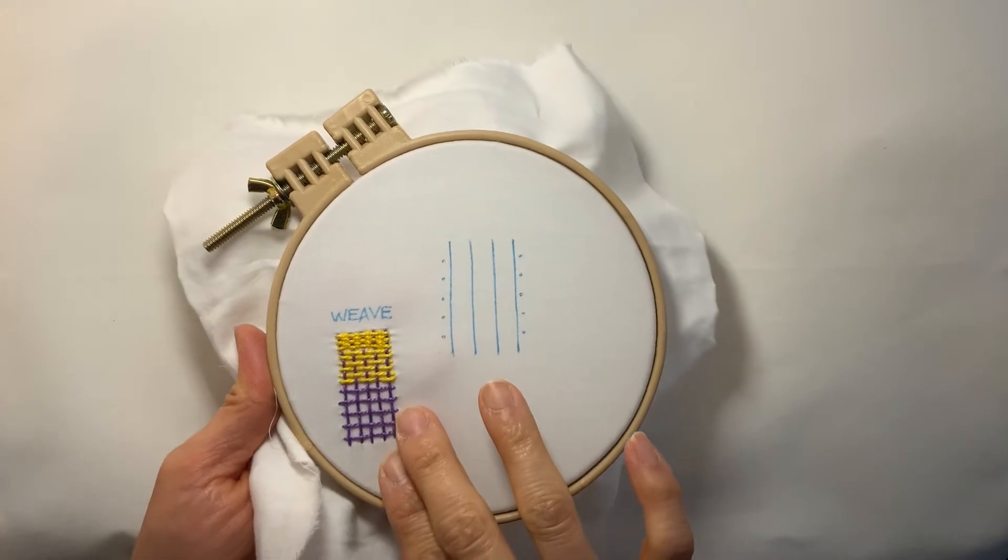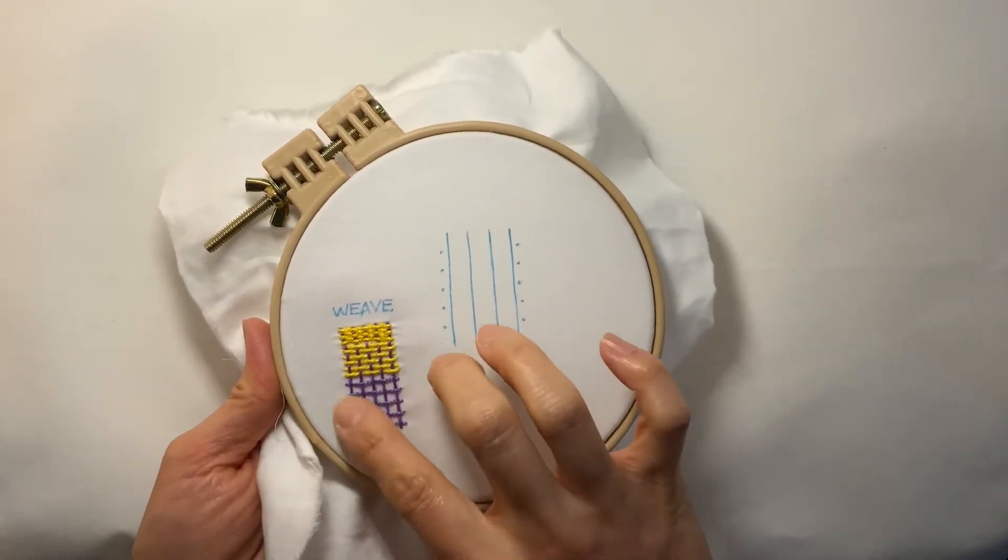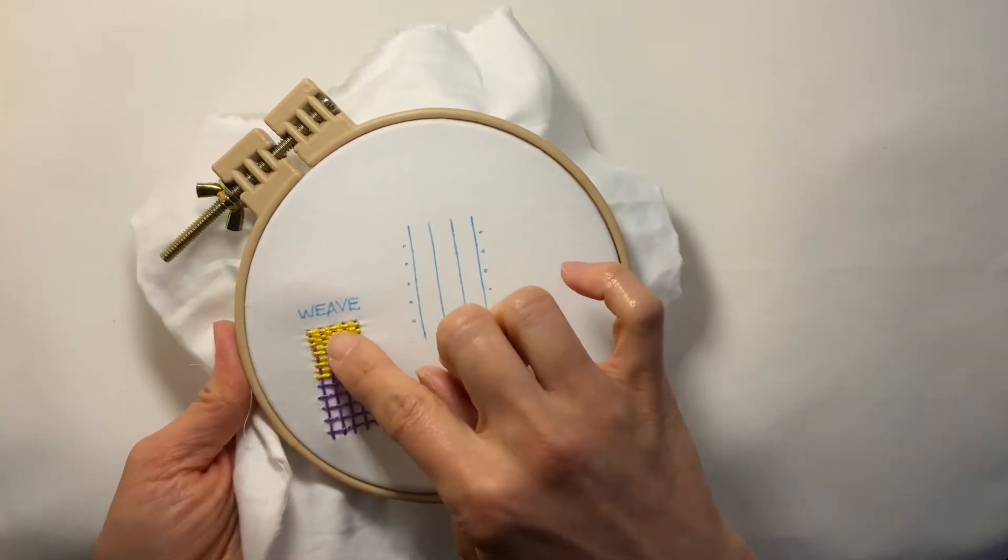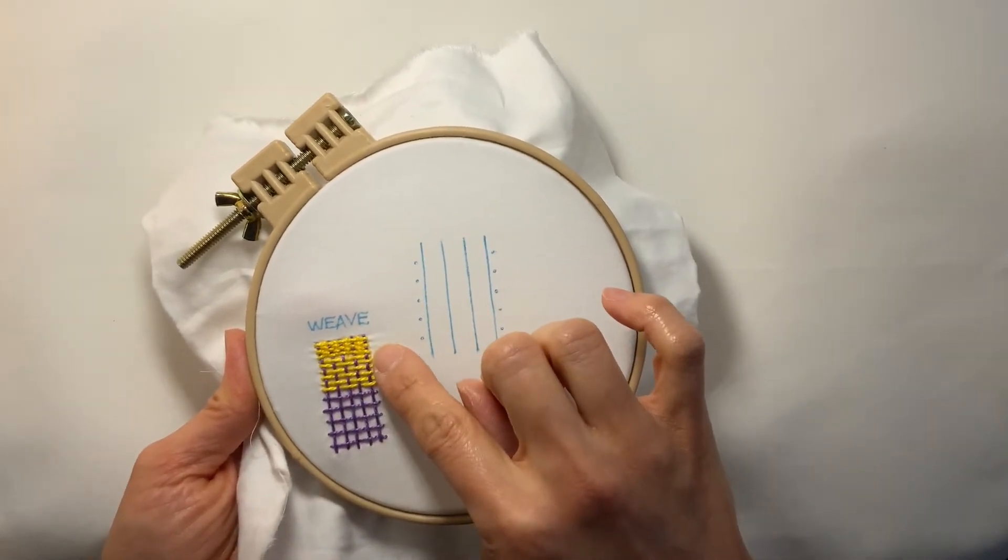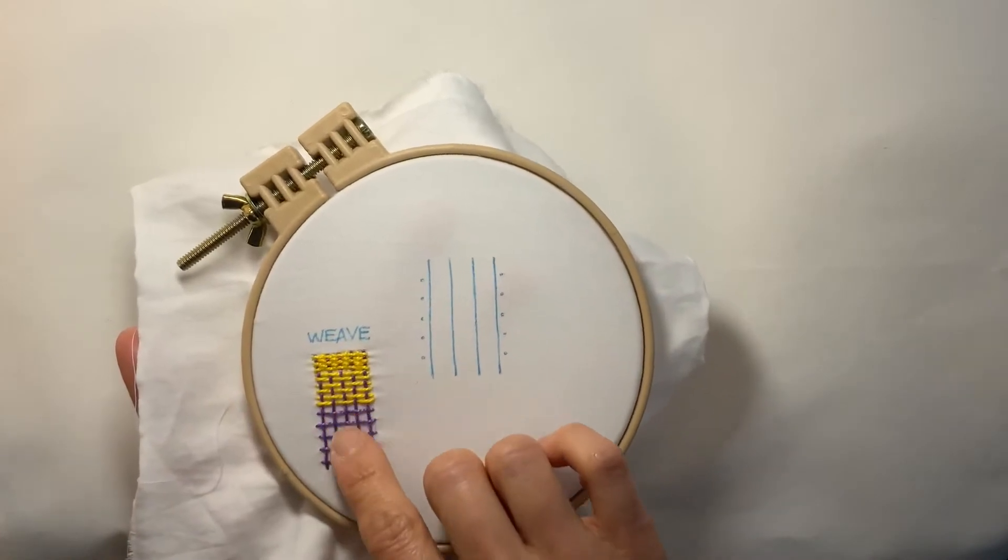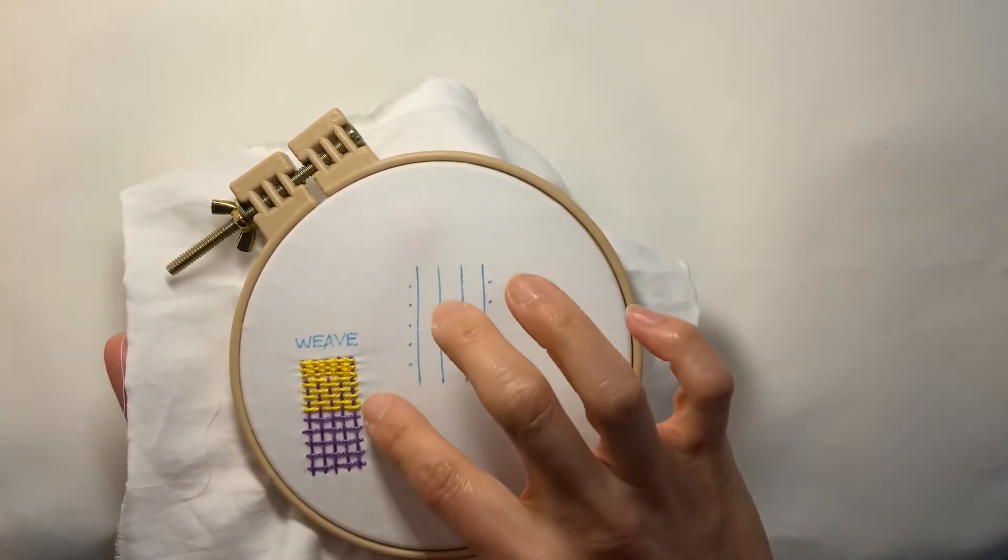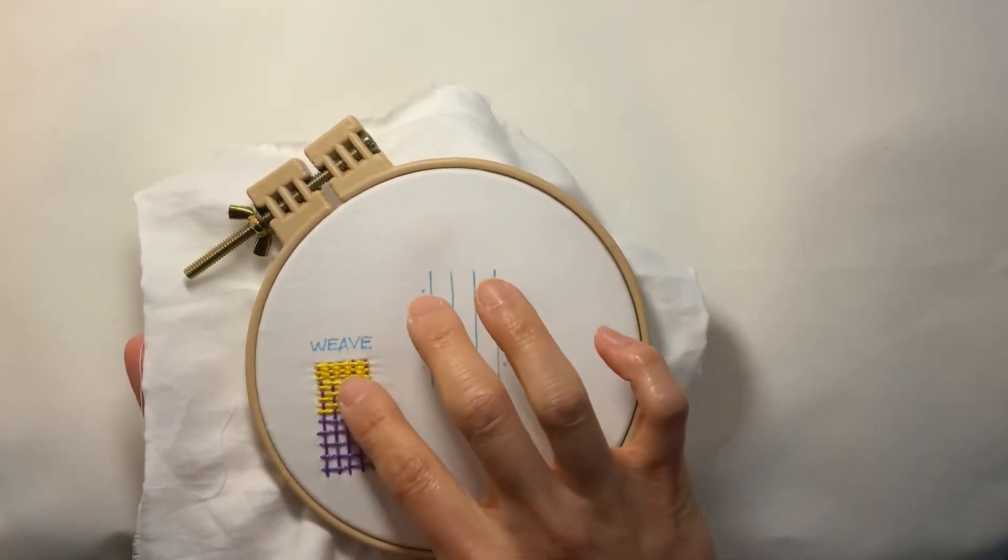The weave stitch can be done with a more open look like this with the stitches spaced farther apart, or a little bit closer together like you see in this example up here. You can make your foundation stitches and your weaving ones in the same color or you can use contrasting thread and just play around with it.